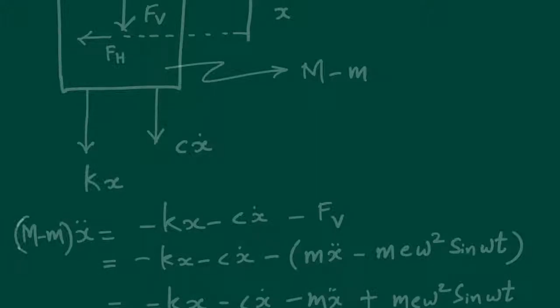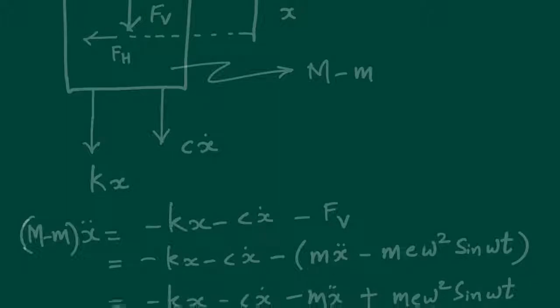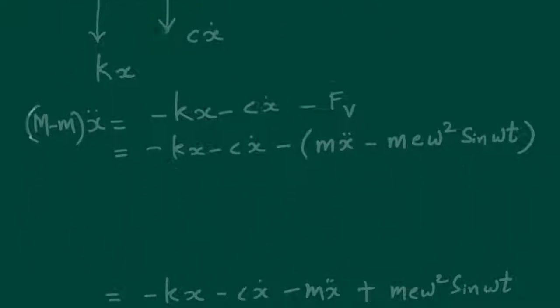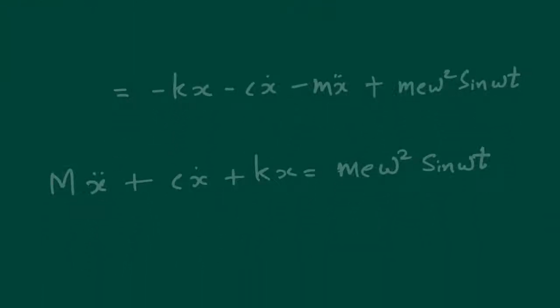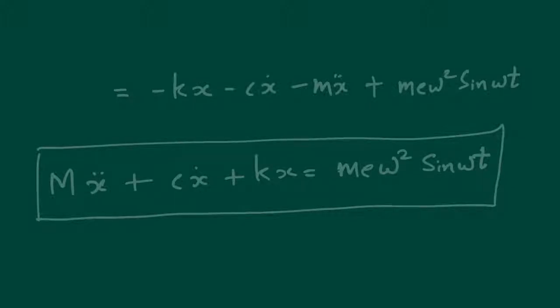Now let's go ahead and write the equation of motion for this particular system. This is the total mass times x double dot. Now if you sum up the forces, these two are acting in the negative direction so minus kx minus cx dot, then again Fv is actually acting here but we have a definite expression from the first case. So we can substitute that particular relation to Fv and finally we do a few mathematical manipulations, and finally this is the equation of motion for the system.